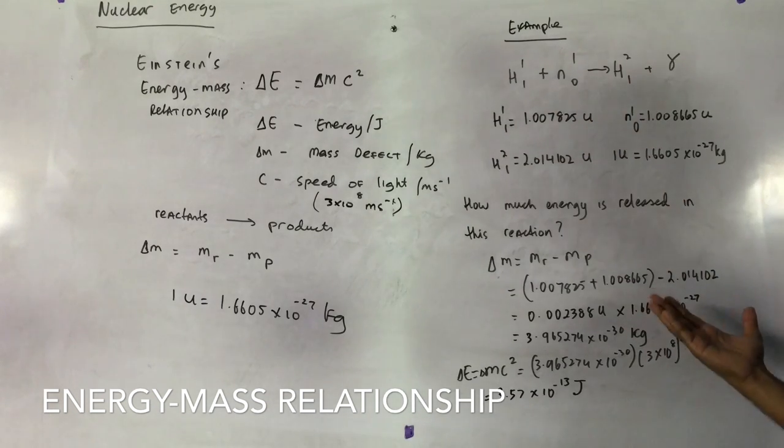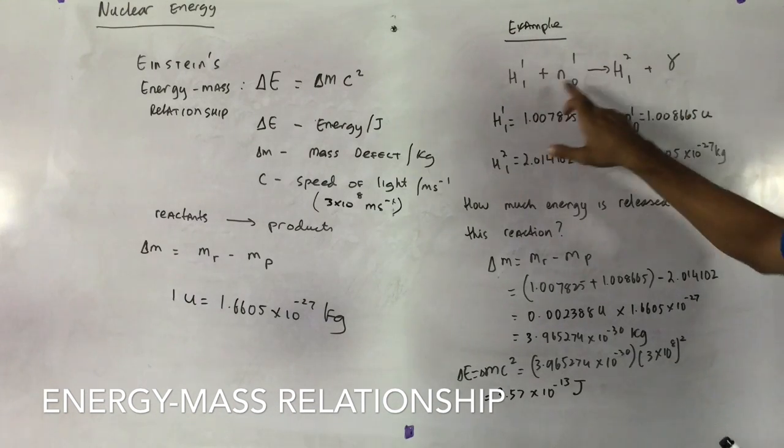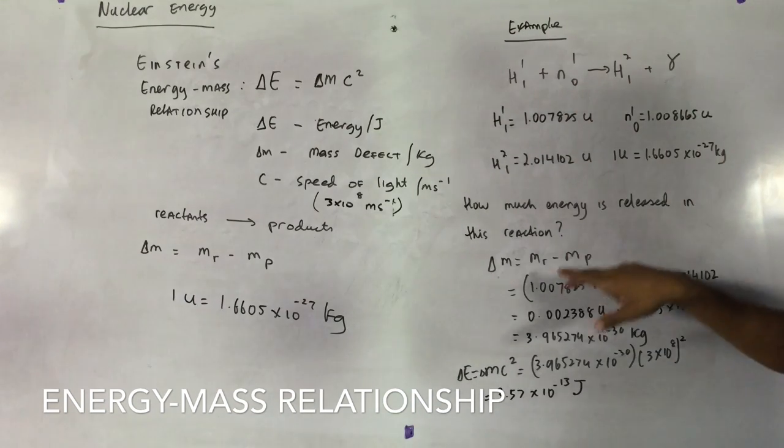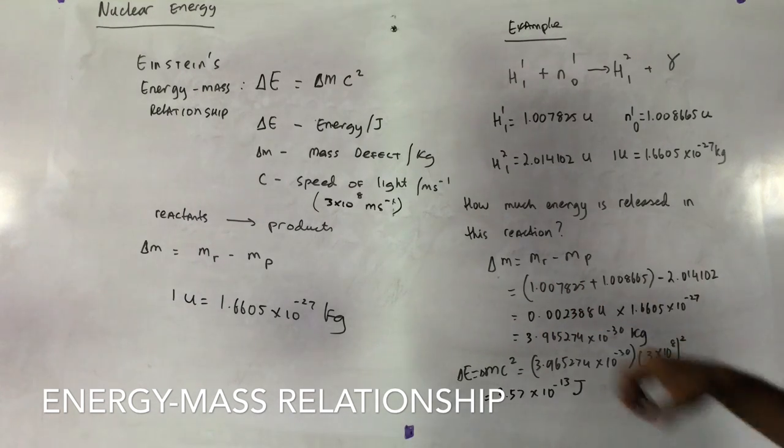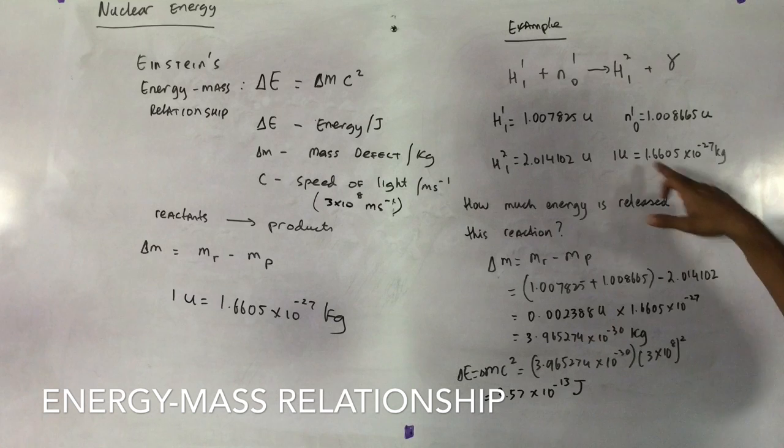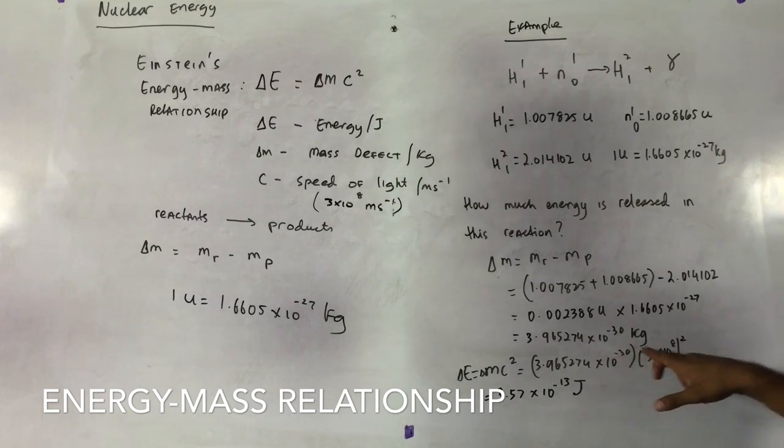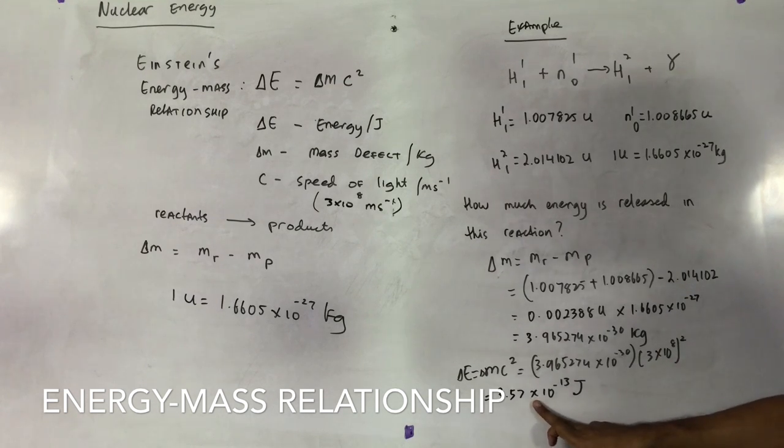Balance your equation, because some questions may have to balance it first. Make sure balance, 1 plus 1 is 2, 1 plus 0 is 1. Good. Find the change in mass, mass of reactants minus mass of products. Find it in U, you'll get it in U, multiply it by the conversion to get in kilograms, then multiply it by the speed of light squared. Please don't forget to do this. And when you work it out, you get this answer.